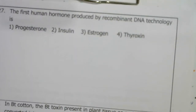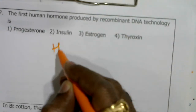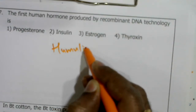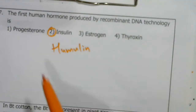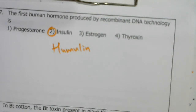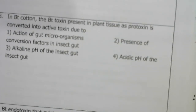The first human hormone produced by recombinant DNA technology is insulin — humulin. In Bt cotton, the Bt toxin present in plant tissue as protoxin is converted into active toxin due to the alkaline pH of the insect midgut.